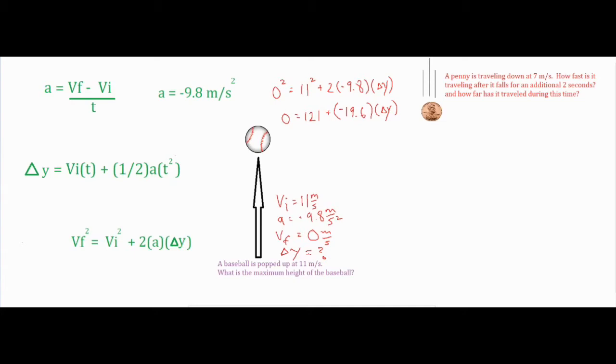Okay, so I just went ahead and set it up and simplified it a little bit just by squaring my numbers and combining my two times negative 9.8, and then from there I just have a couple of steps of algebra and then I have completed the problem.